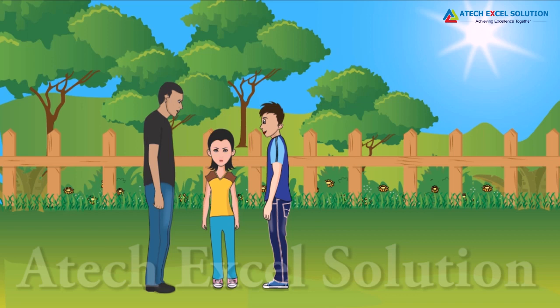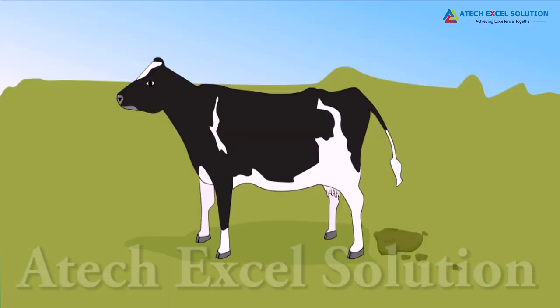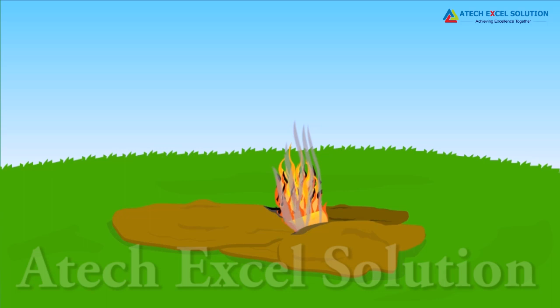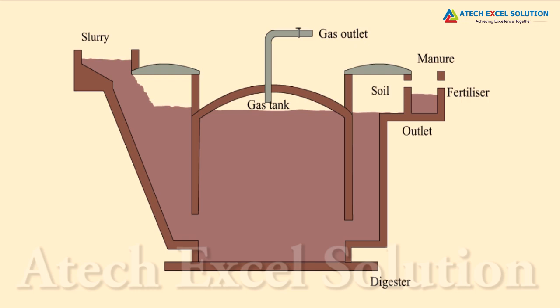Biogas is another good source among conventional sources of energy. Biogas is made out of plants and animal products. When we simply burn them, they give a lot of smoke and not enough heat. But with technology, it is now possible to make them produce a great amount of heat energy and almost no smoke. Look at the diagram — this is a biogas plant. Slurry is cow dung or raw materials mixed with water. The gas generated is a form of energy that can be utilized in many ways, such as lighting.